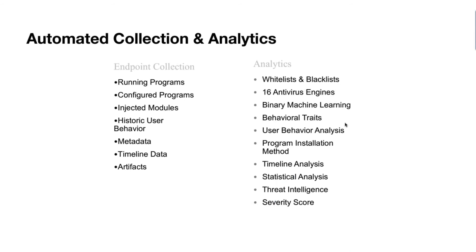Endpoint collection covers running programs, configured programs, injected modules, heuristic user behavior, metadata, timeline data, and artifacts. The analytics layer adds whitelisting and blacklisting, 16 antivirus engines, binary machine learning, behavioral traits, user behavioral analysis, program installation methods, timeline analysis, statistical analysis, threat intelligence, and severity scoring. All together, these features combine to create an automated analyst in a box.